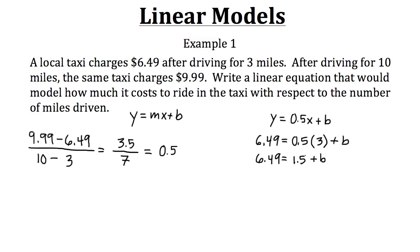If we want to isolate b we need to get rid of the 1.5 by subtracting it to both sides. So it'll cancel out on the right side. And then when we do 6.49 minus 1.5 we'll get 4.99 equaling our b value.